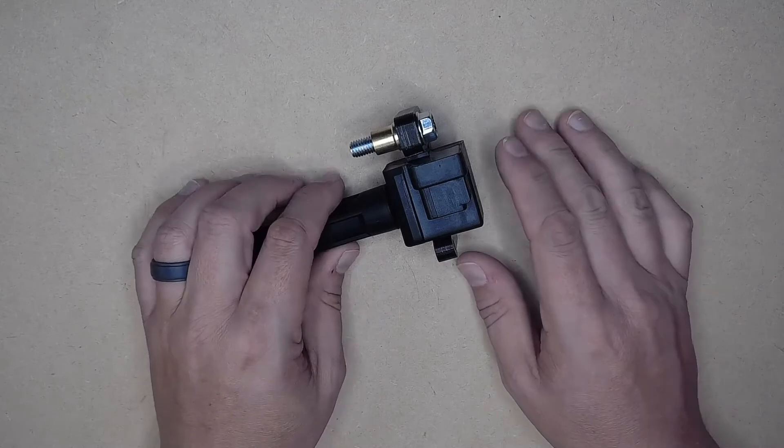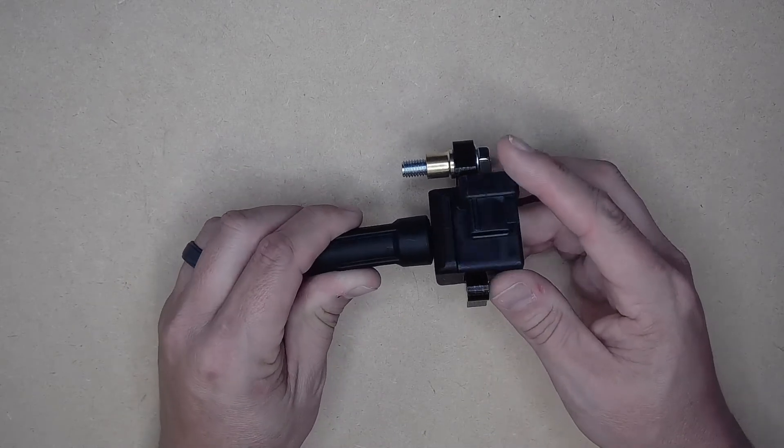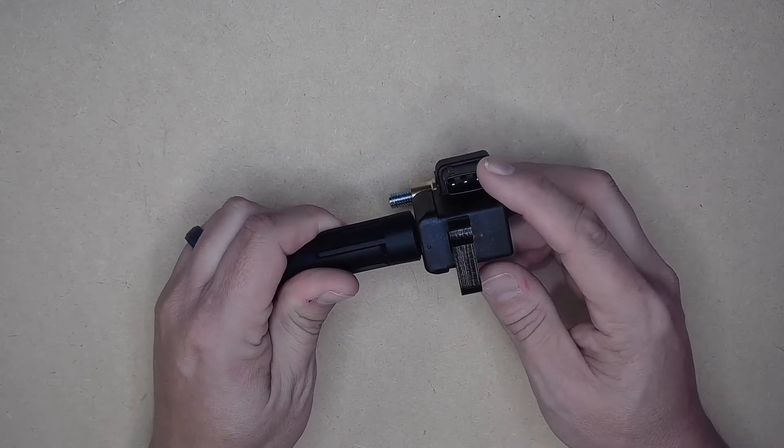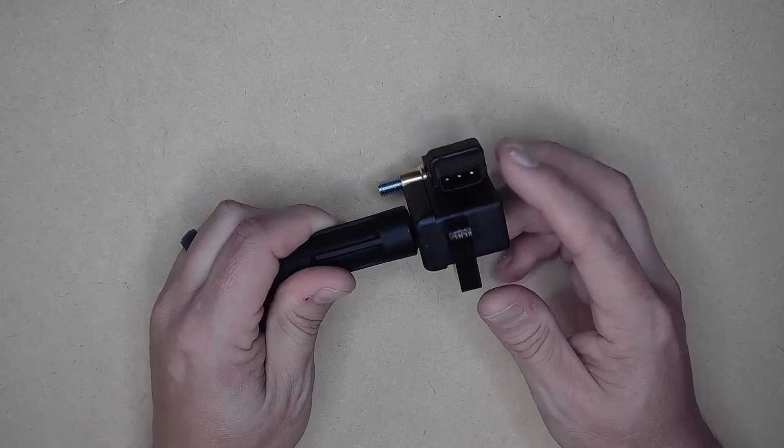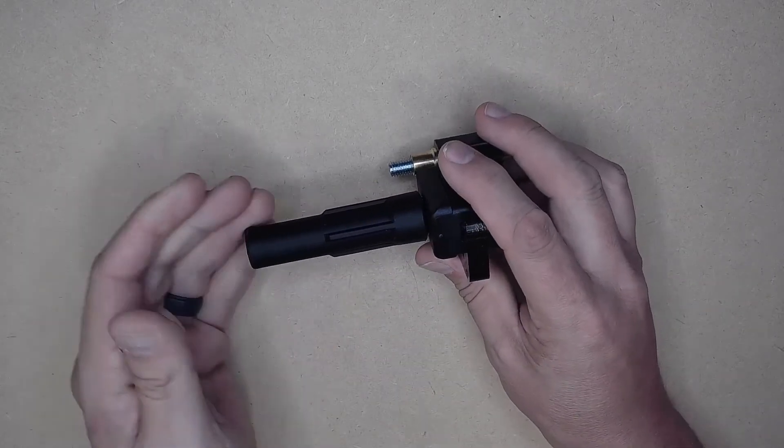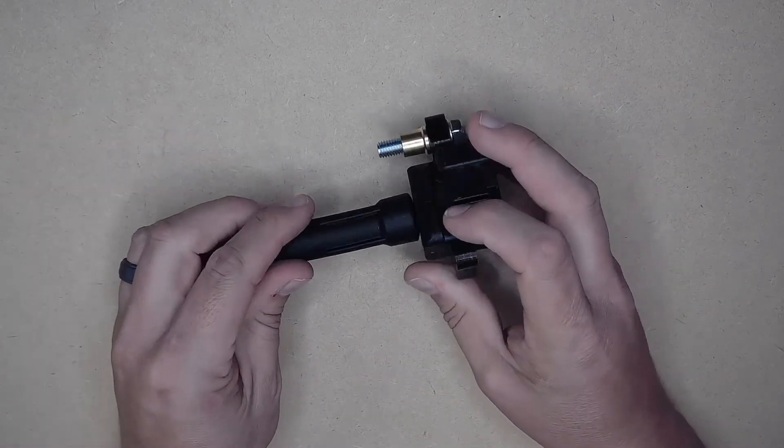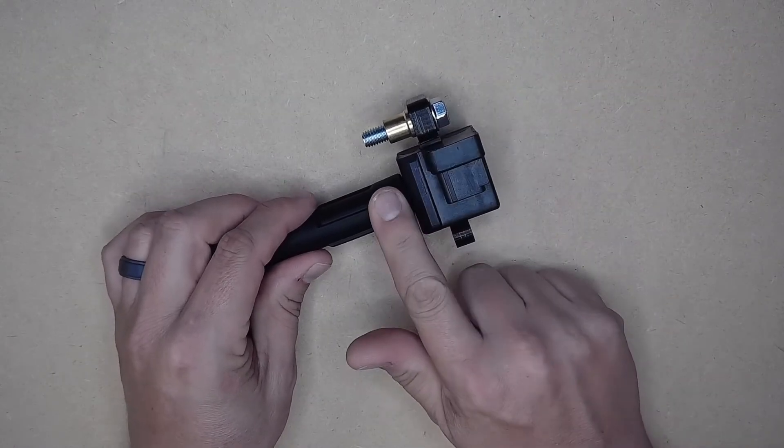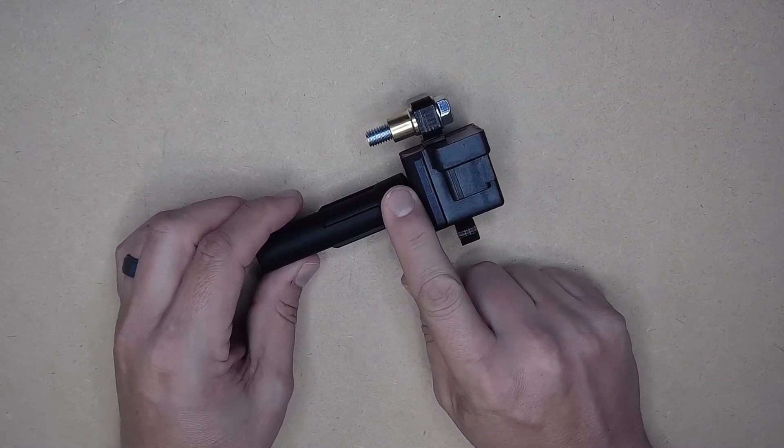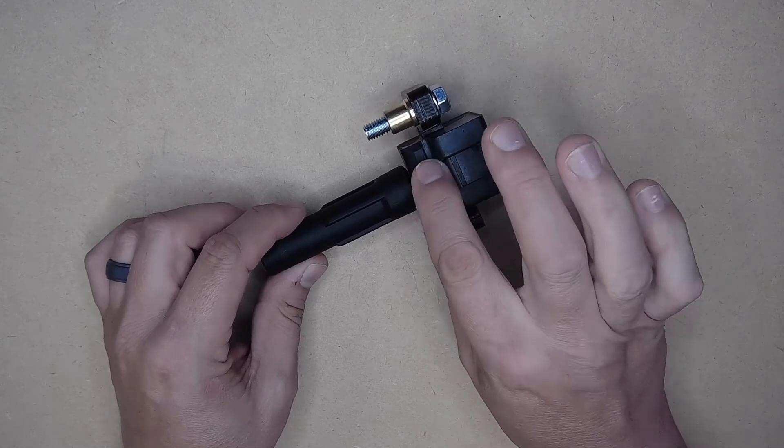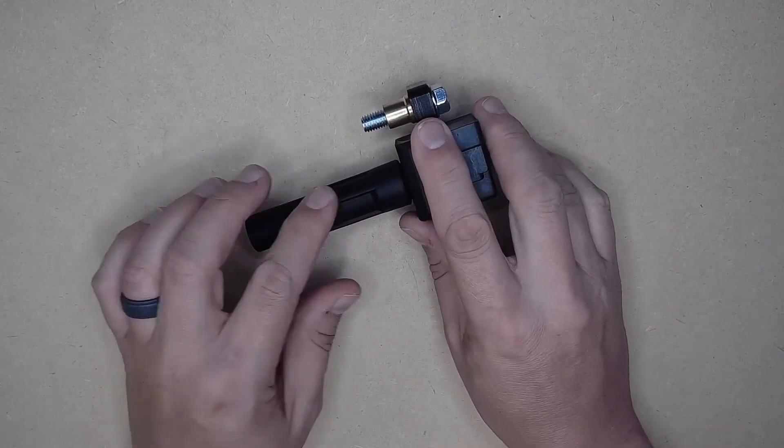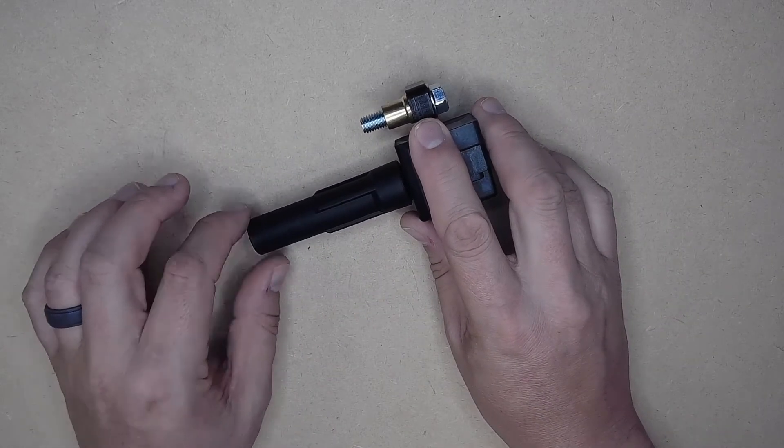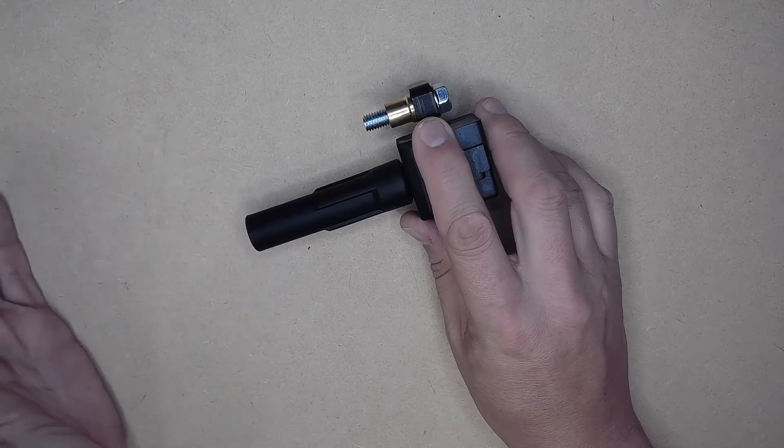What your ignition coil does is it receives a signal from your vehicle's ECU to send power to the spark plug which then ignites the fuel in your engine. This coil pack has a primary, secondary, and magnetic core inside which provides a very strong and precise spark that is then sent through the high voltage connection to your spark plug.